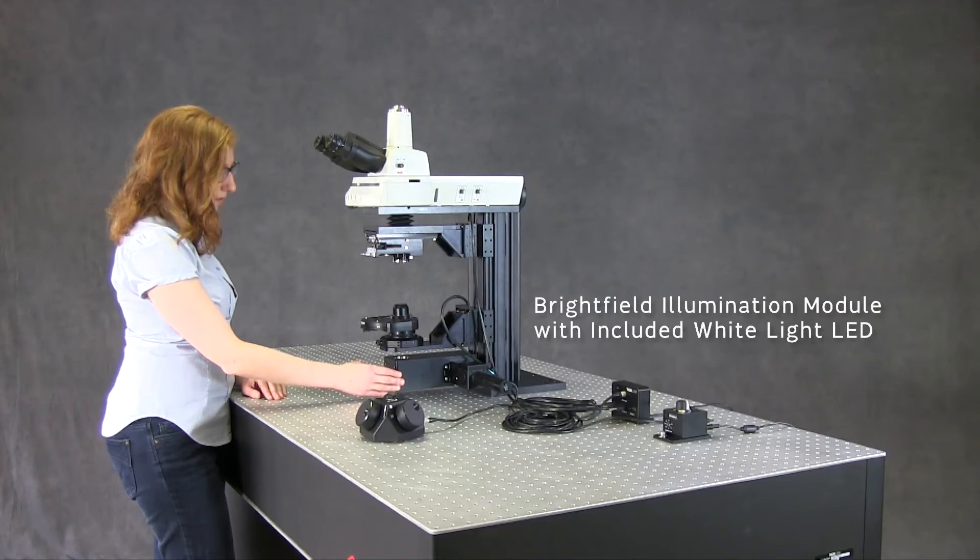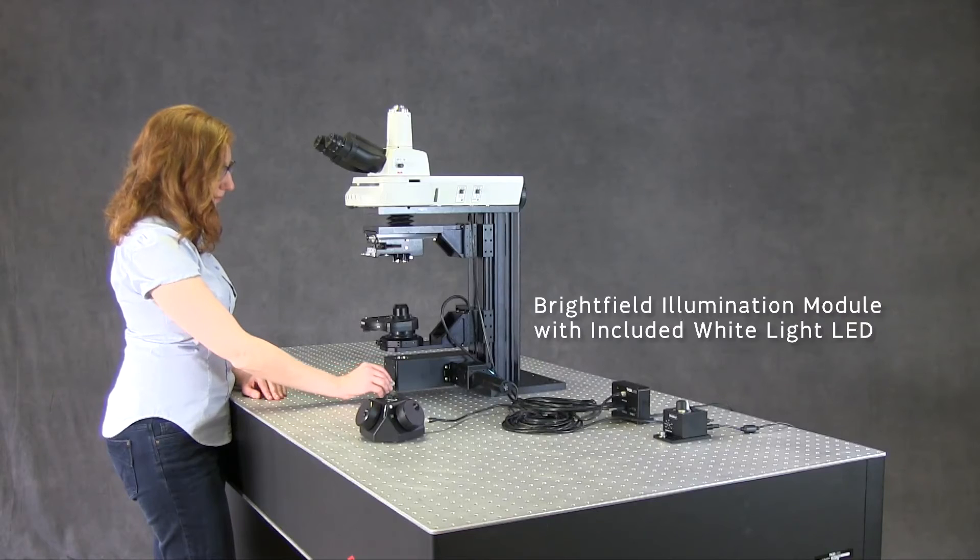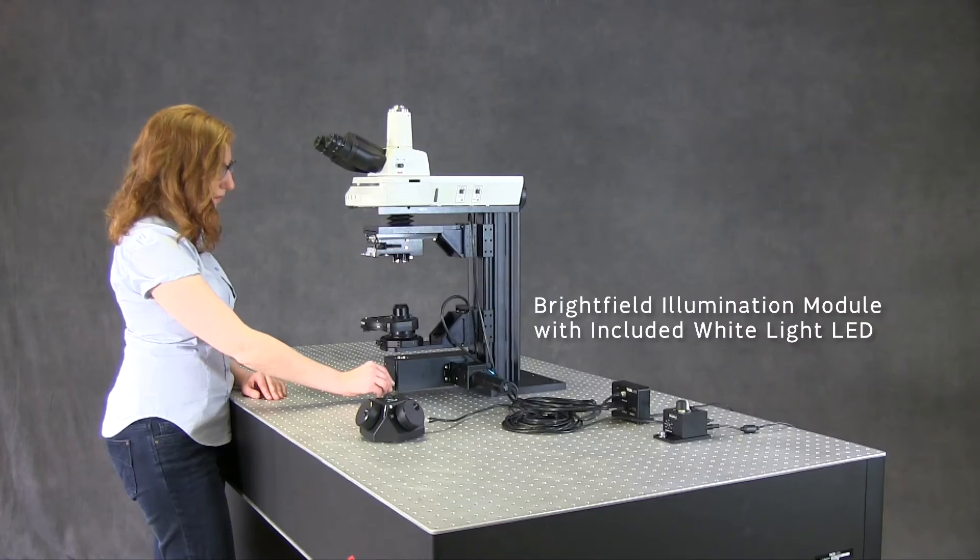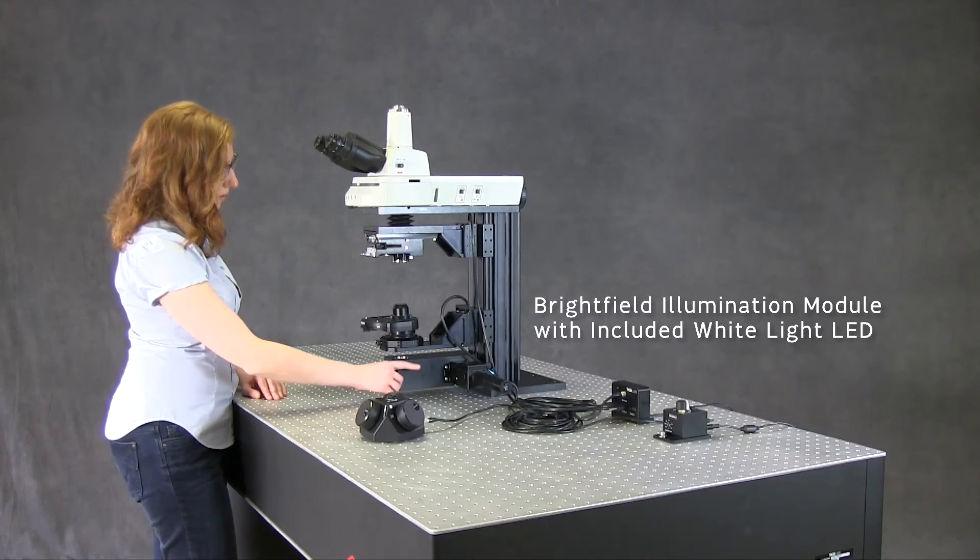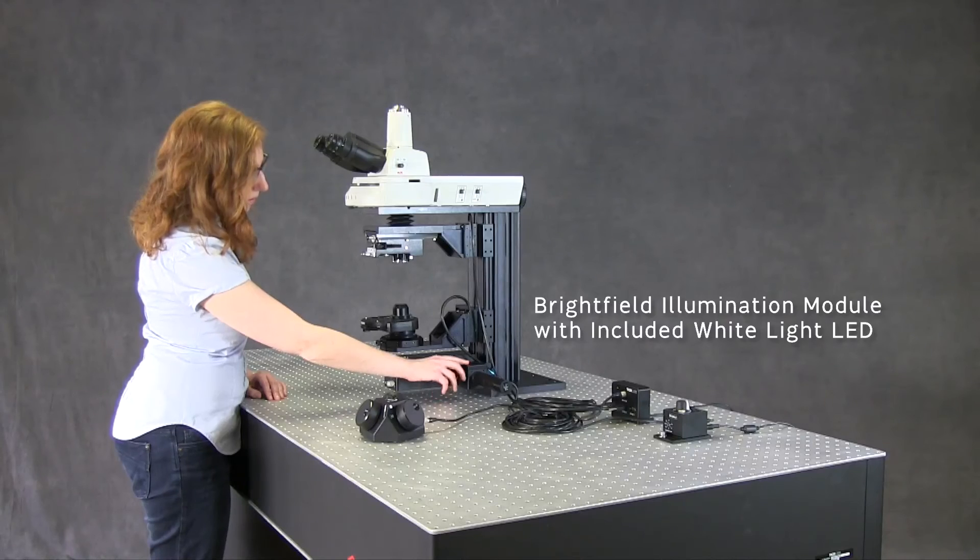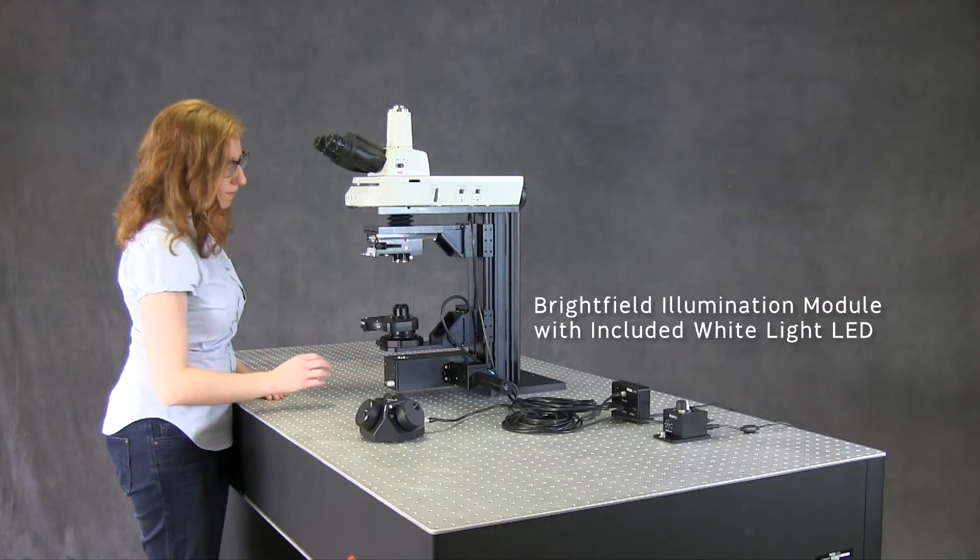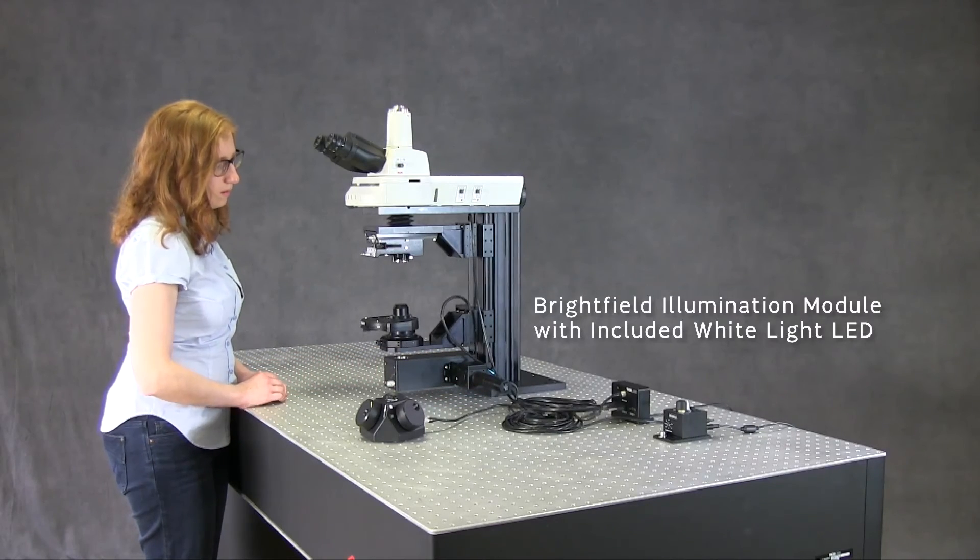To support brightfield imaging, we have added a transillumination module with a white light LED. A built-in iris is opened and closed by rotating the knob on the front. The LED is attached to the module using a filter cube, which offers an extra port if you wish to add another illumination source later.